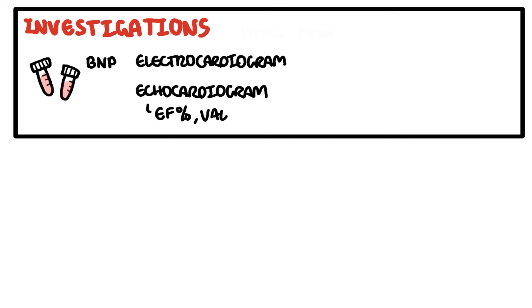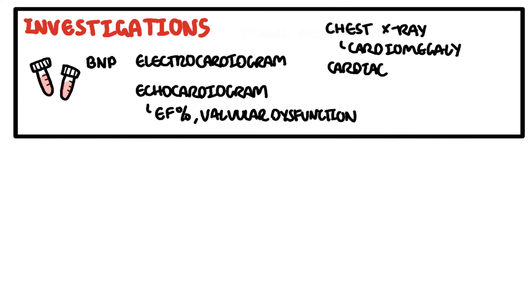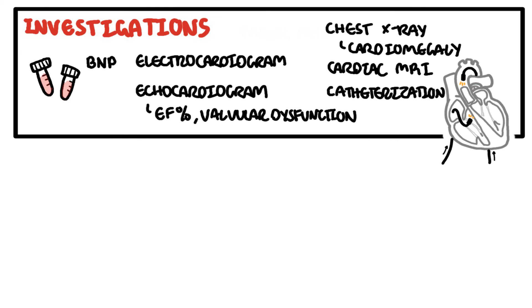Investigations to order include a brain natriuretic peptide which is released by the ventricles and is a marker of ventricular distention or pressure, electrocardiogram which may show arrhythmia, echocardiogram to detect the ejection fraction as well as to look for valvular problems specifically in the presence of right-sided heart failure for example, chest x-ray which may show cardiomegaly, cardiac MRI to look for infiltrative diseases as well as right or left cardiac catheterization can be done.